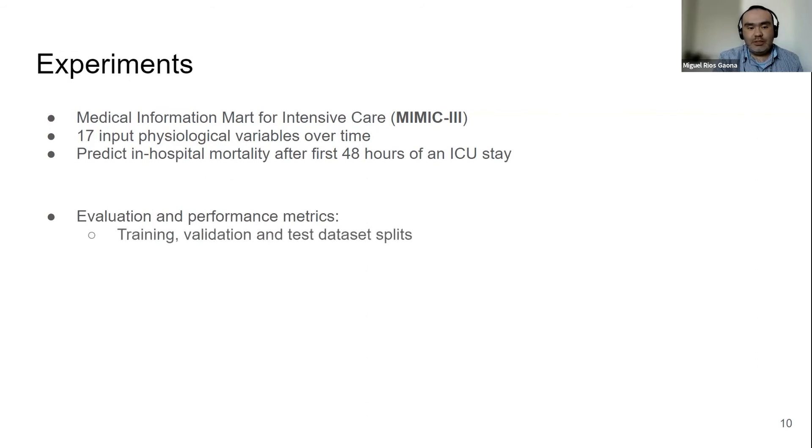For our performance metrics, we are going to split into training, validation, and test sets. We are going to use AUC-ROC and AUC-PR with a mean and standard deviation of 10 runs to check whether the improvements come from our model or any random initialization of neural networks.